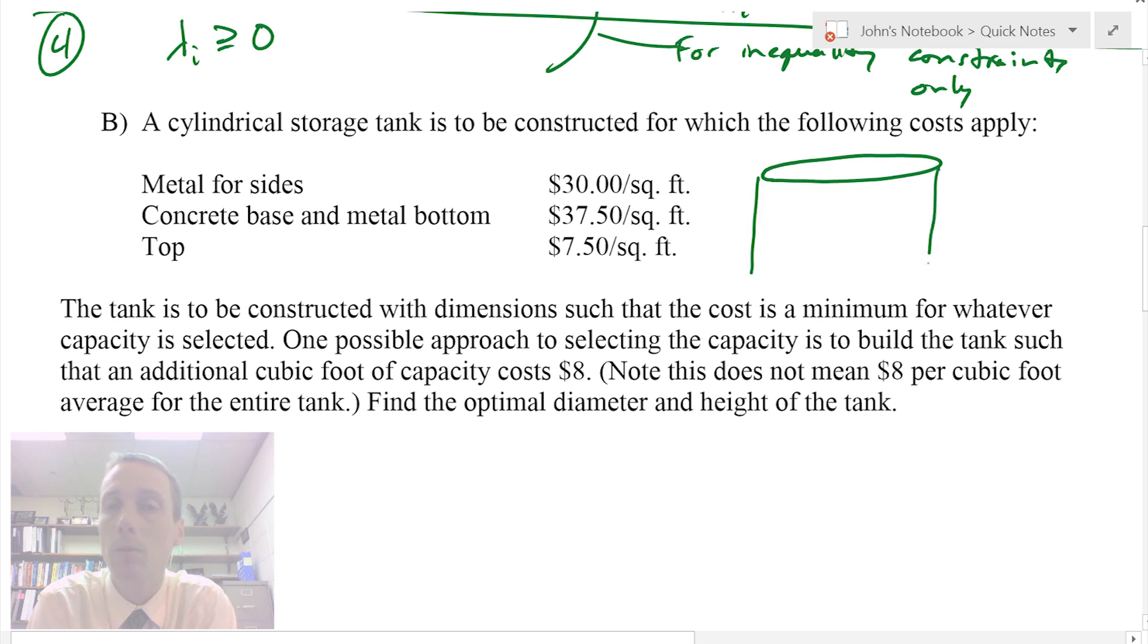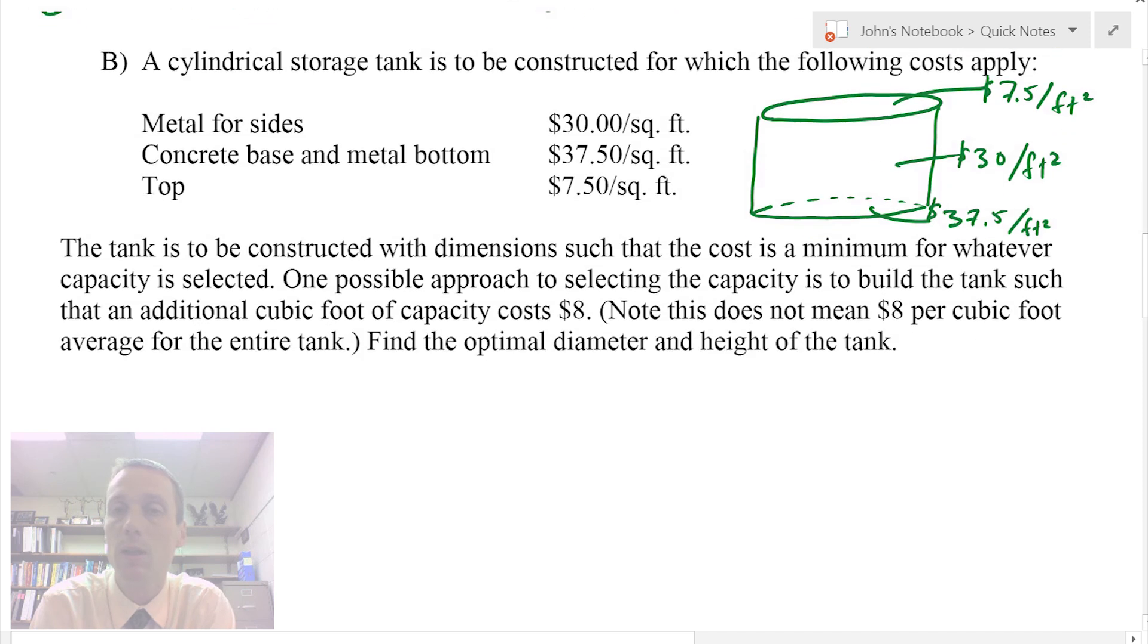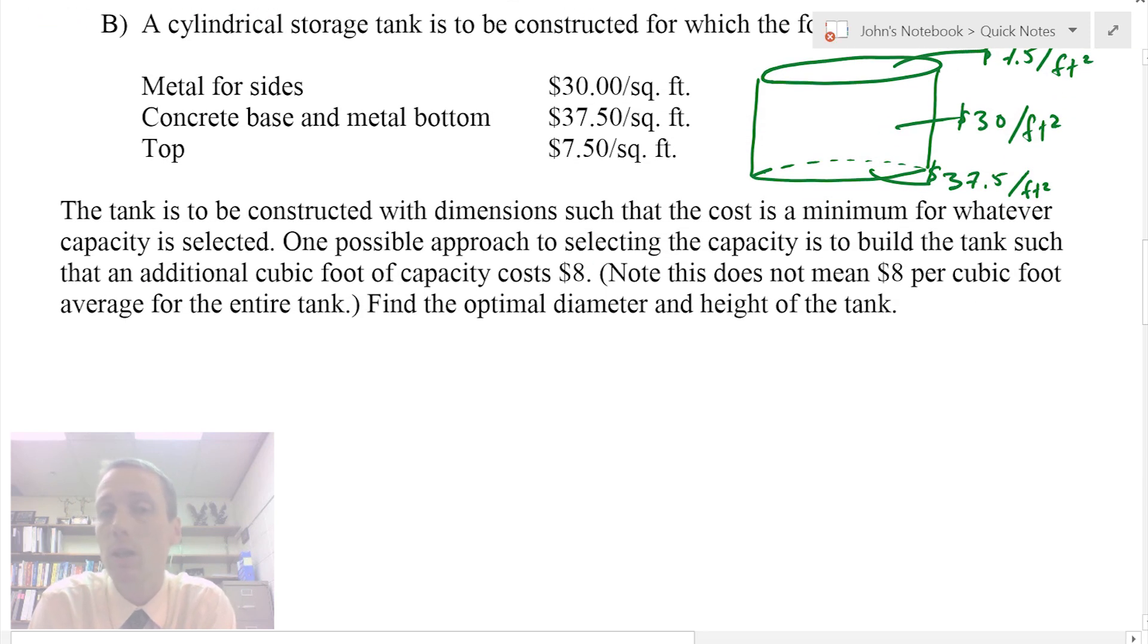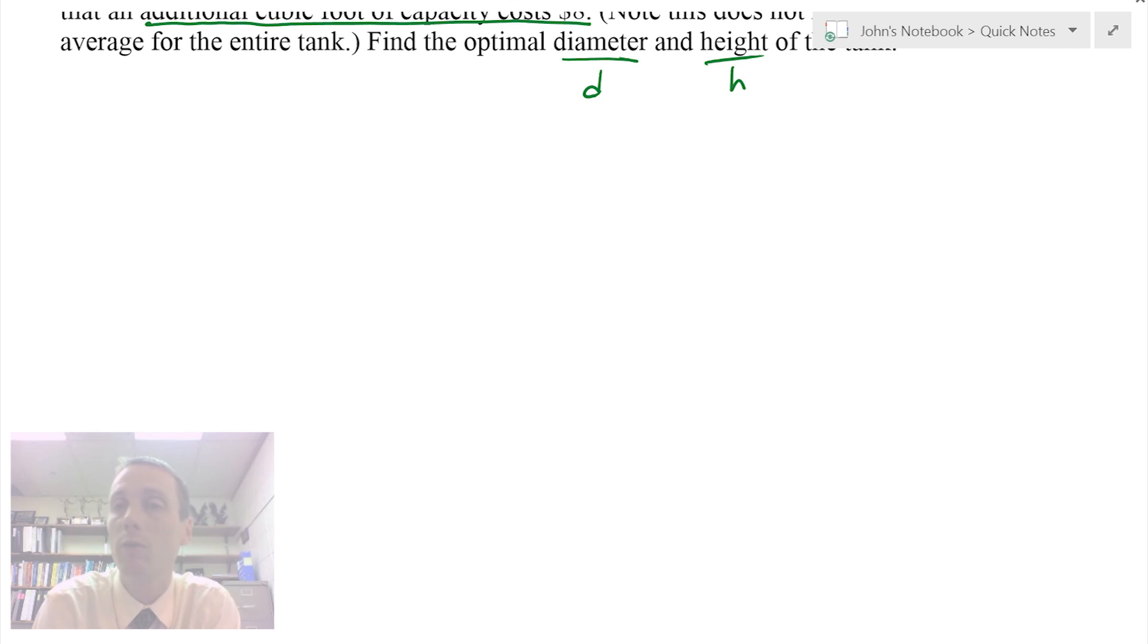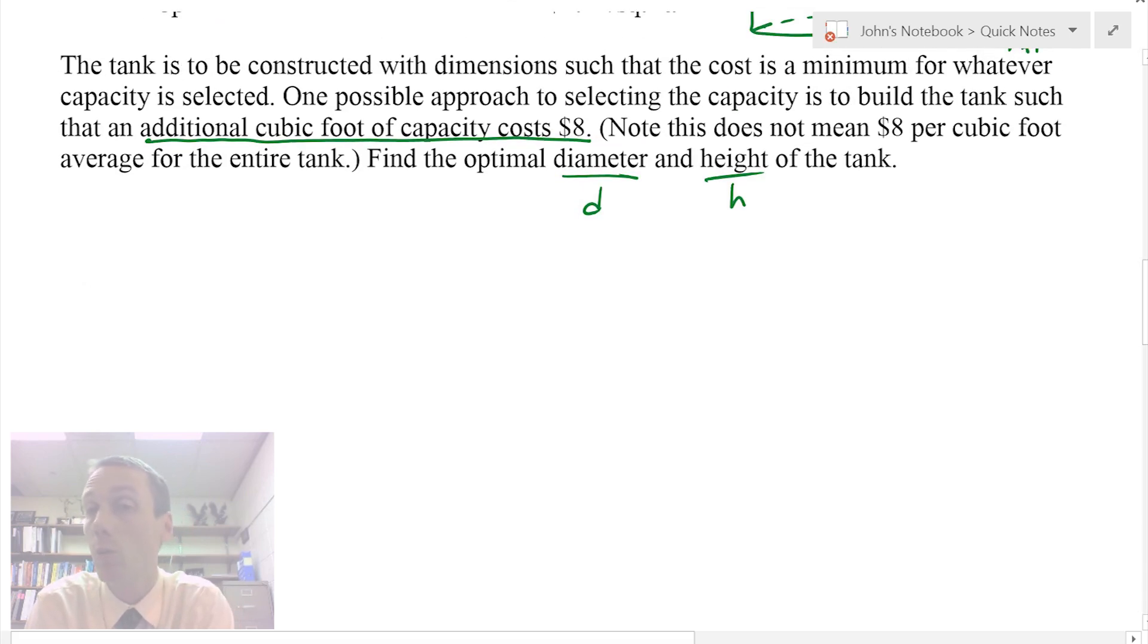Let's go to our example problem. We have a cylindrical storage tank with different costs for the sides, the base, and the top. Let's write down our dollars per feet squared for the surface area of each. The bottom is most expensive, sides are next most expensive, and the top is least expensive. One thing we want is to make the additional cubic foot of capacity cost $8, and we're going to find the optimal diameter and height with this Lagrange multiplier of $8 per cubic foot.